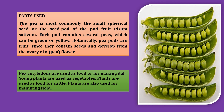Parts used: the pea is most commonly the small spherical seed or the seed pod of the pod fruit Pisum sativum. Each pod contains several peas which can be green or yellow. Botanically, pea pods are fruit since they contain seeds and develop from the ovary of a pea flower. See the pea pods — this is the diagram of pea pods. Within this, peas are there; you can see a bunch of peas within the pea pods.